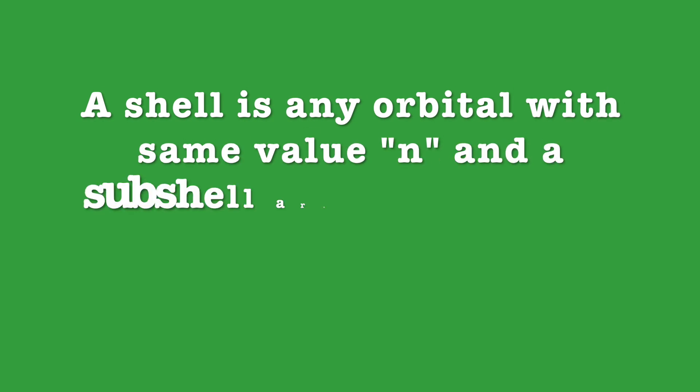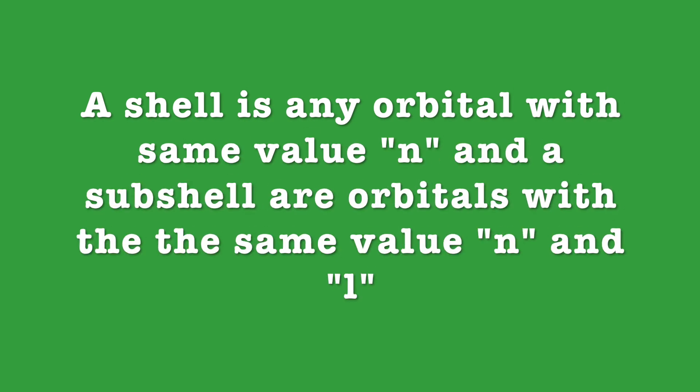Now that we understand each quantum number, let's go over a few definitions. A shell is any orbital with the same value of n, and a subshell refers to orbitals with the same values of both n and l.